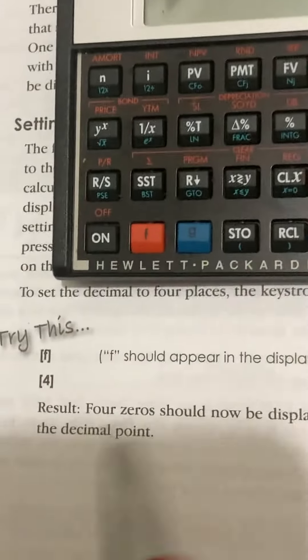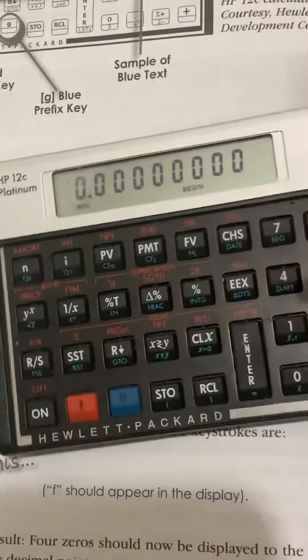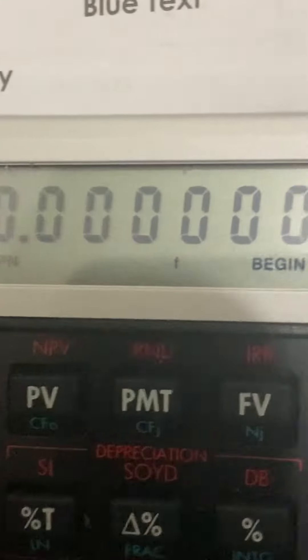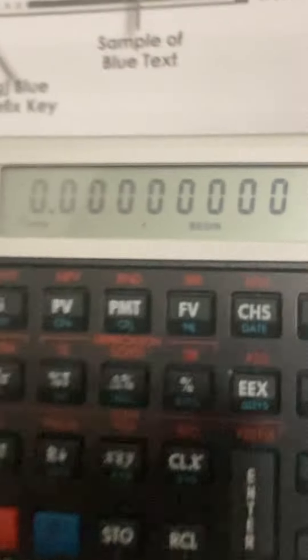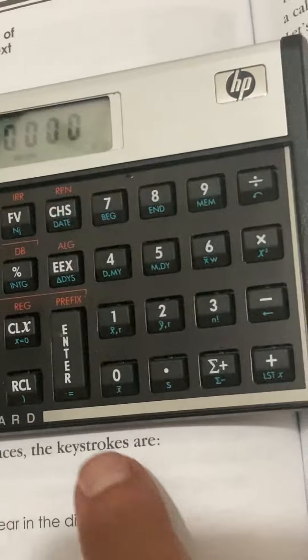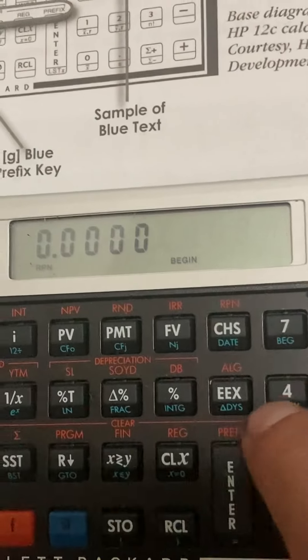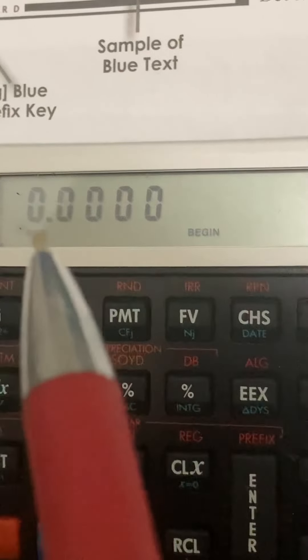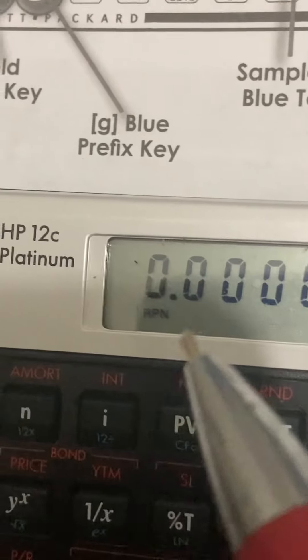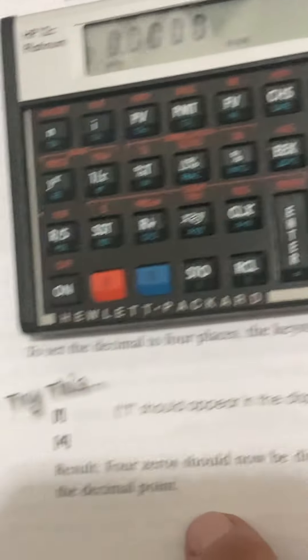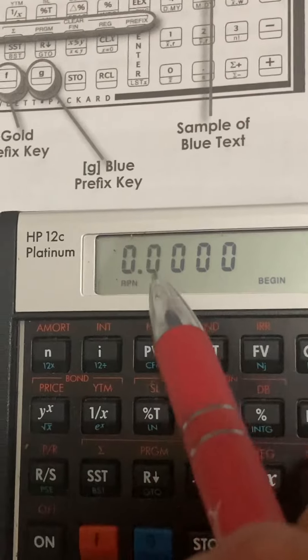All right, we're going to turn it on. Press the F shift button. When you do it, you look closely, it'll show it right here, the tiny little letter. F should appear in the display. Press the number four. When you do that, it changes from all the zeros. The little F disappeared, and it'll say 0.0000. In the little words, it'll say R.P.N. for reverse Polish notation, and it'll also say begin. Result. Four zeros should now be displayed to the right of the decimal point. There's your decimal point. One, two, three, four zeros. Correct.